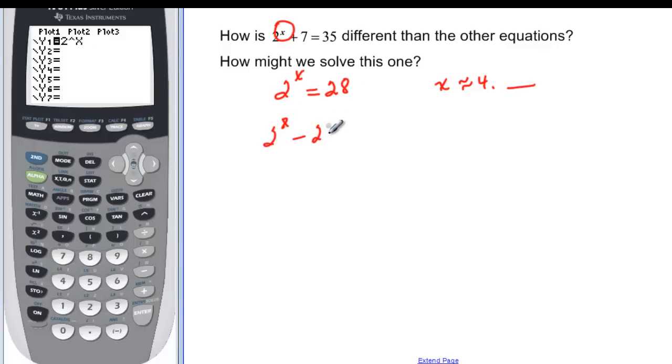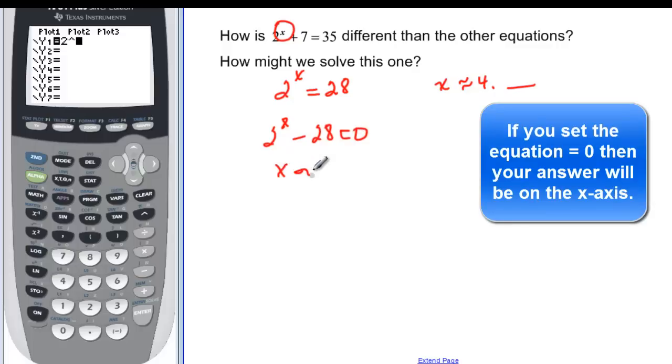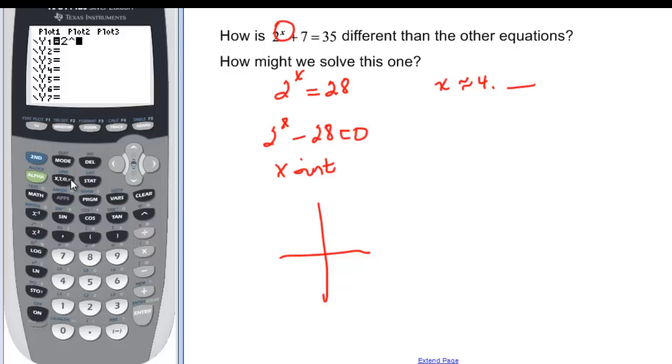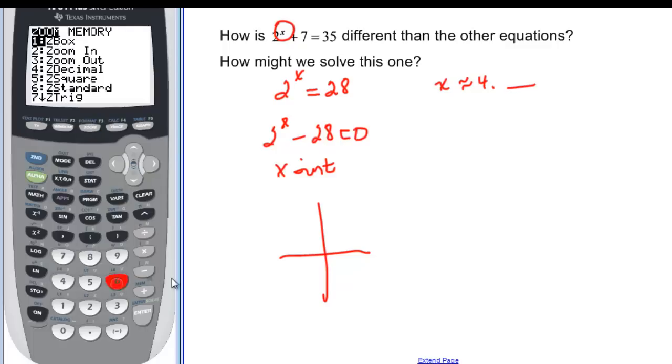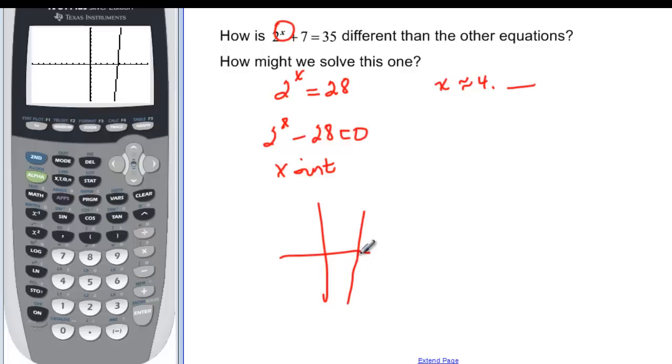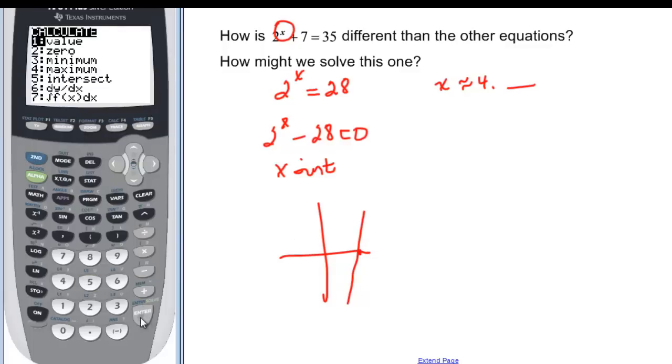So minus 28 equal to 0. Then I'm going to look for my x-intercept. So if I graph it, I have 2 to the x again. And then minus 28. And zoom 6 for a standard window. And I get a graph that looks like something like this. And my intersection point. Second, trace, 5. Enter, enter, enter.